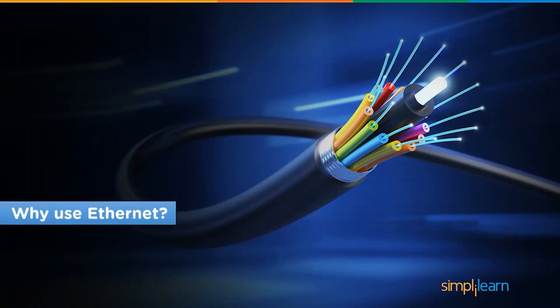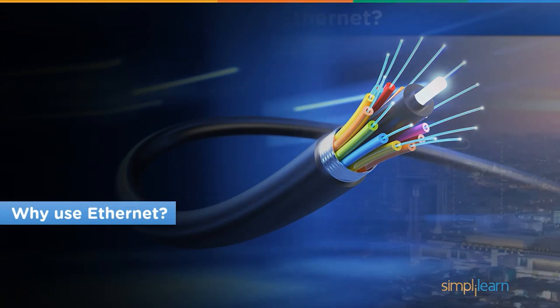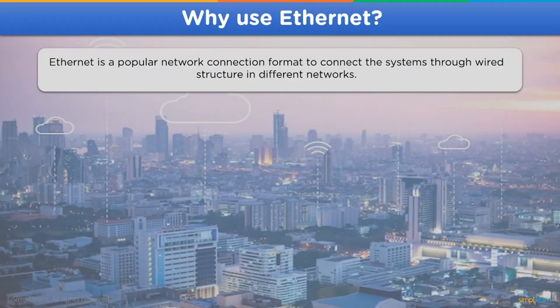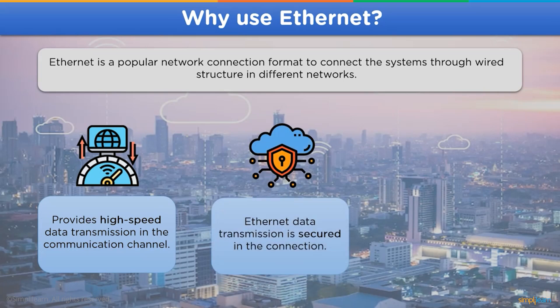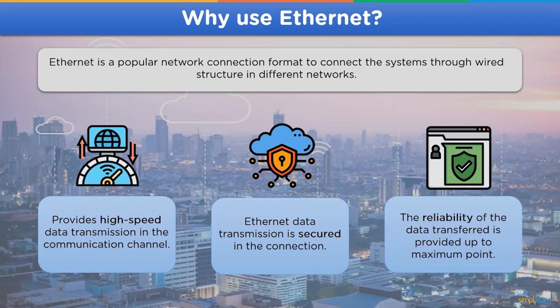Moving on, let's look into why to use Ethernet. As we now know, Ethernet is a mode of connection for multiple devices to share and exchange data. Using this way of transmission also has its benefits. For example, the Ethernet network provides us with a high speed connection for sharing data. Ethernet also provides the user data with a secure channel for transmission. The data transmitted over the Ethernet channel is reliable and has rarely faced any issues at the sender site.